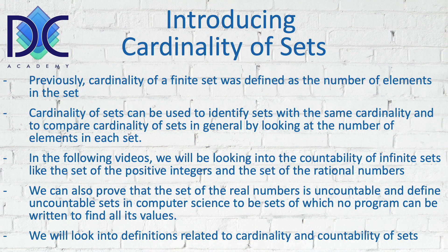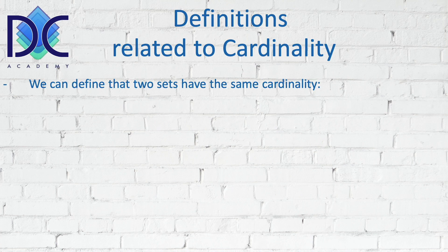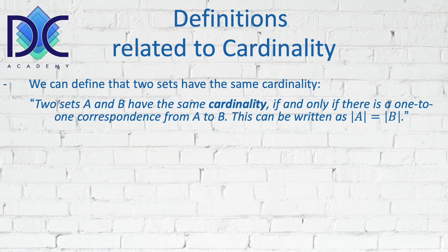First we look at some definitions related to cardinality. We can say that two sets A and B have the same cardinality if and only if there is a one-to-one correspondence from A to B, and we can write it as the cardinality of A is equal to the cardinality of B. We use the same notation as we used for absolute value in mathematics — the two vertical bars around the set name denote the cardinality of that set.